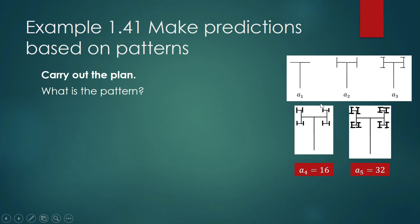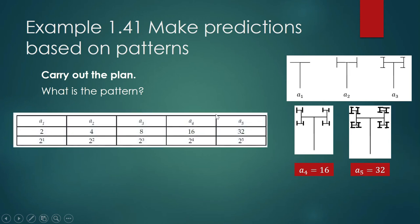The pattern turns out to be a sequence: the first term through the fifth term. There are 2 sticks in the first term, 4 in the second term (that is 2 squared), 8 in the third term (2 cubed), 16 in the fourth term (2 to the fourth), and 32 in the fifth term (2 to the fifth). We can now see the pattern clearly.